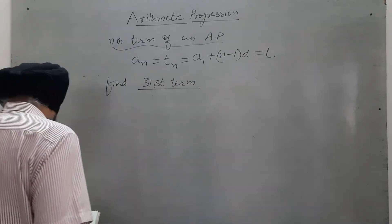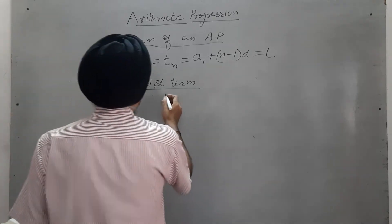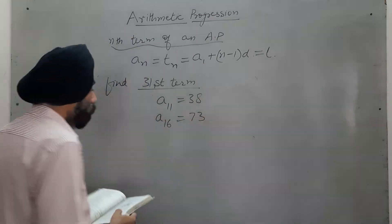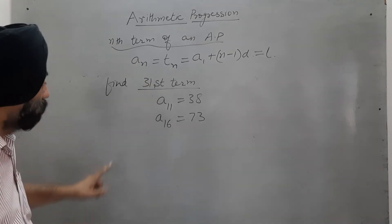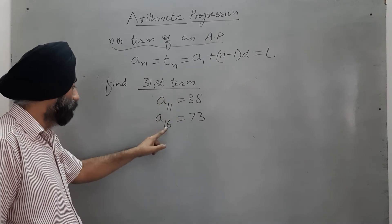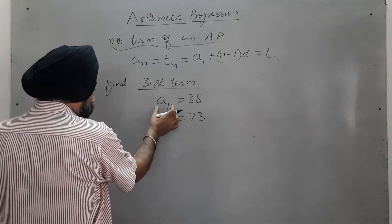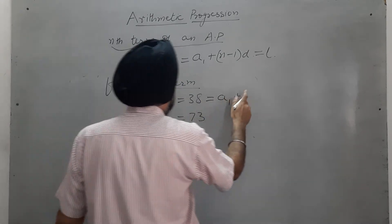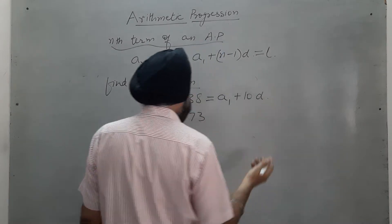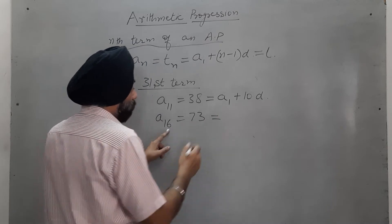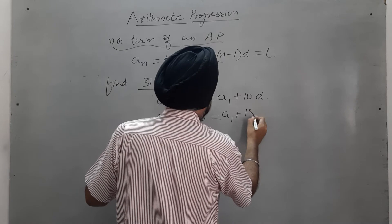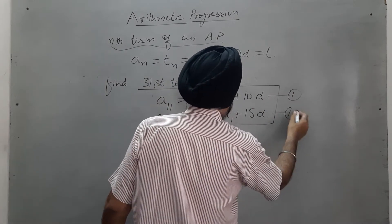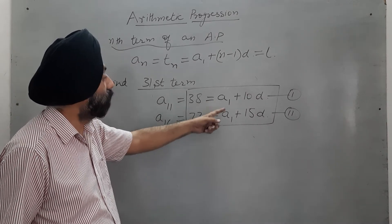Another question: the 11th term is 38 and the 16th term is 73; find the 31st term. Setting up equations: A₁₁ = A₁ + 10D = 38, and A₁₆ = A₁ + 15D = 73. We now have two equations with two unknowns, A₁ and D, which we can solve easily by elimination.